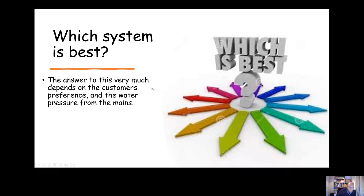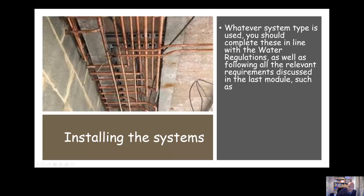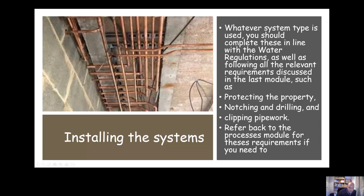Which system is best depends on what the customer wants. Take into consideration the mains water pressure — if it's low, you might recommend an indirect system — but ultimately it's up to the customer. Whichever system is installed, it must be done in line with the water regulations and building regulations requirements discussed in the last module, such as notching rules, pipe protection, and clip distances. There will be a few questions on this in the cold water test.